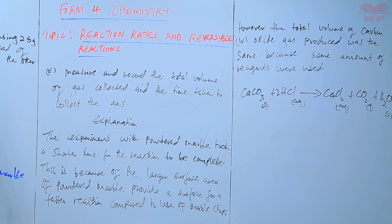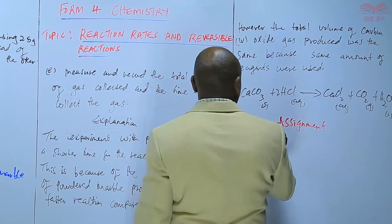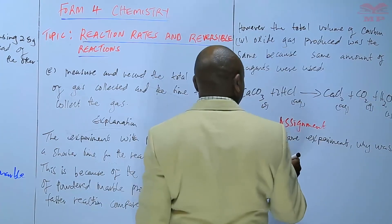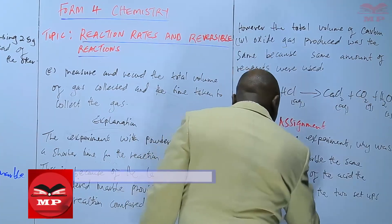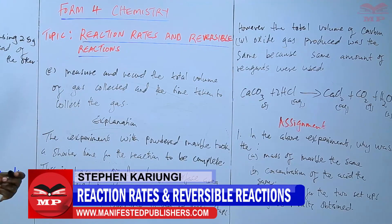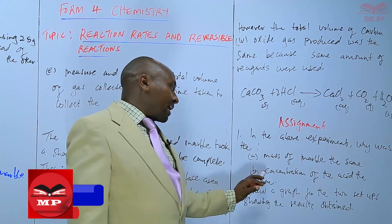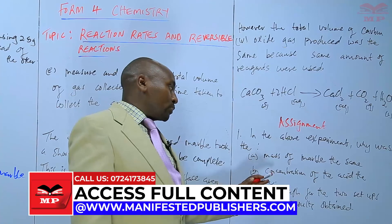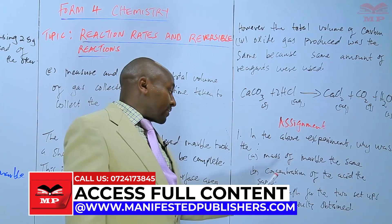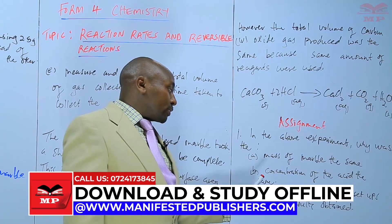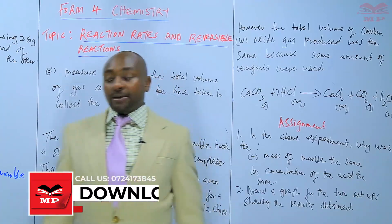We can have an assignment at this stage. In the above experiment: (1) Why was the mass of marble the same and the concentration of the acid the same — why did we use the same mass of marble and the same concentration of acid? (2) Draw a graph for the two setups showing the results obtained in each case. We will stop there until next time. Goodbye!